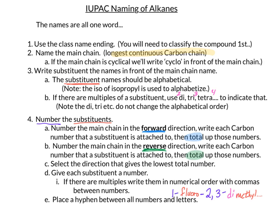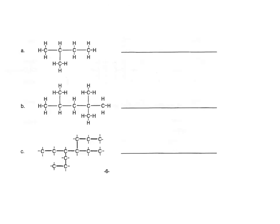Those are the rules for naming alkanes. Obviously this is not easy to remember without practicing, so now let's do some practice. Let's start with compound A. We note that this is a hydrocarbon with all single bonds — that makes this an alkane. The ending will be -ane.